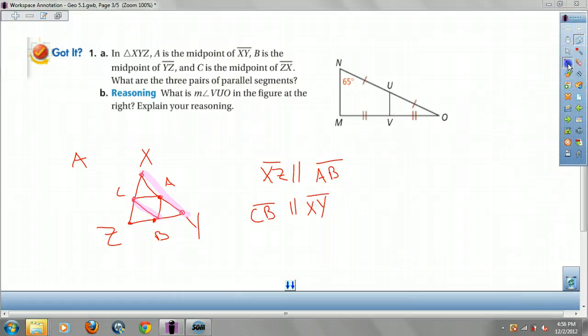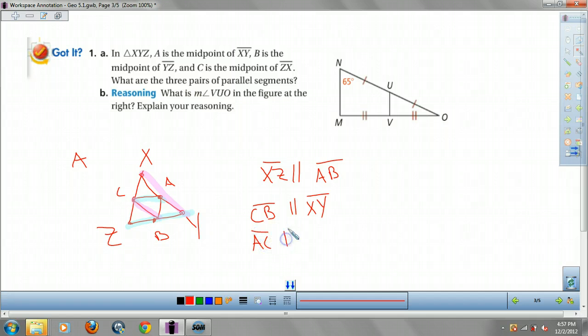And we have one more. AC would be parallel to ZY. Okay. So that's A. Now let's take a look at B.